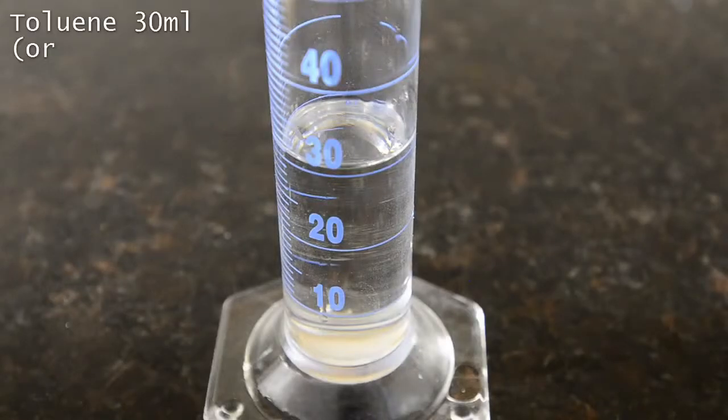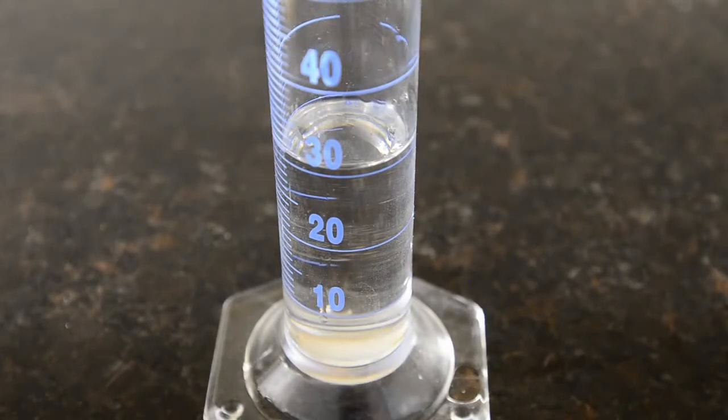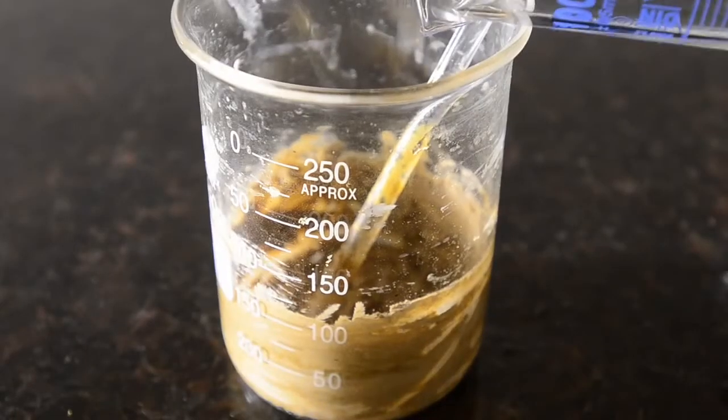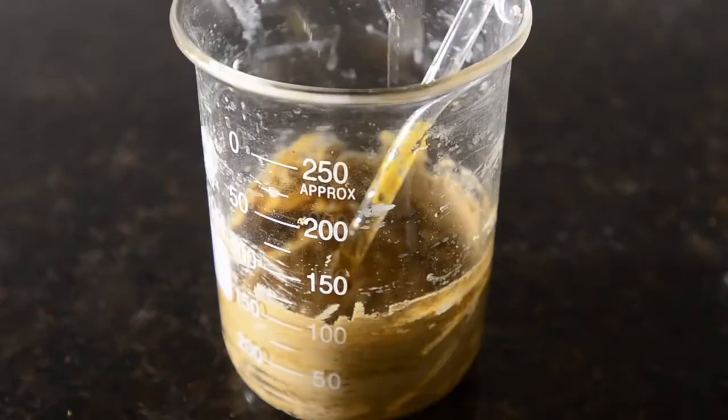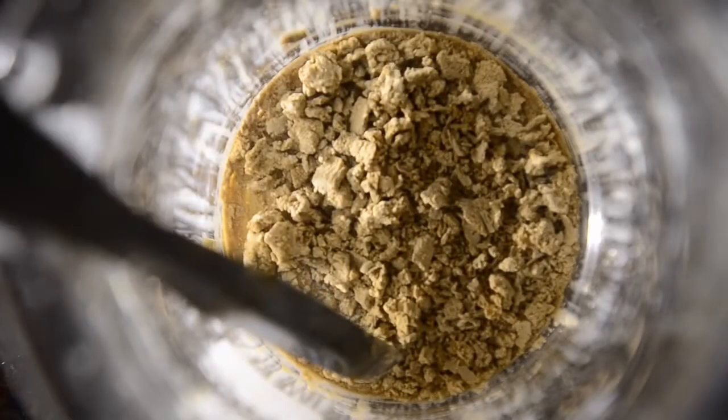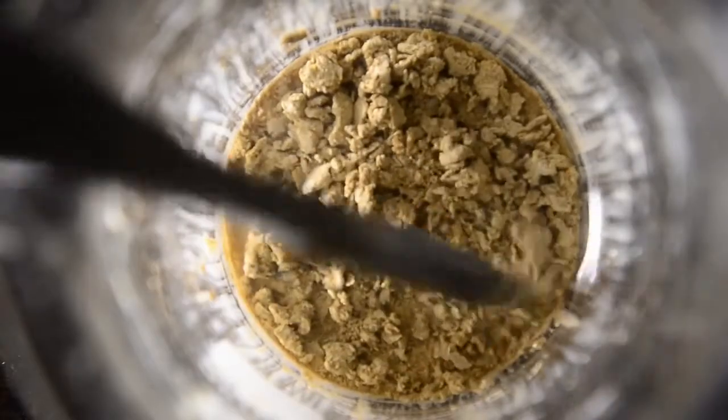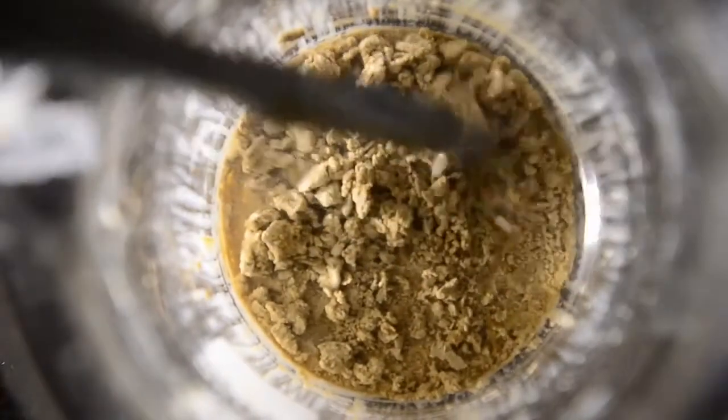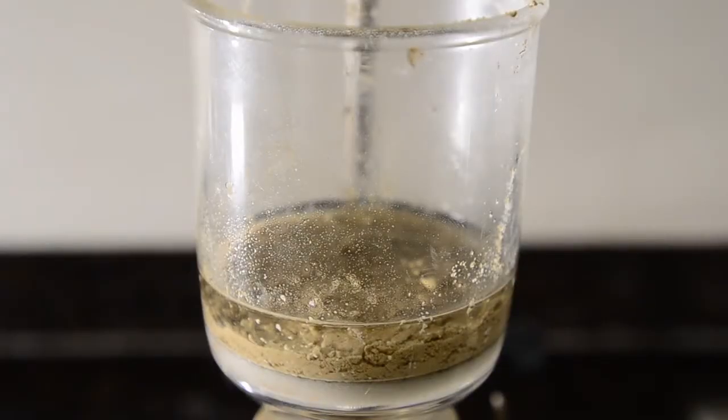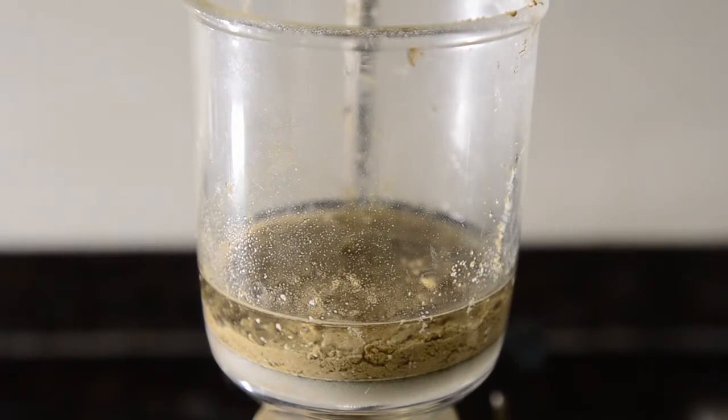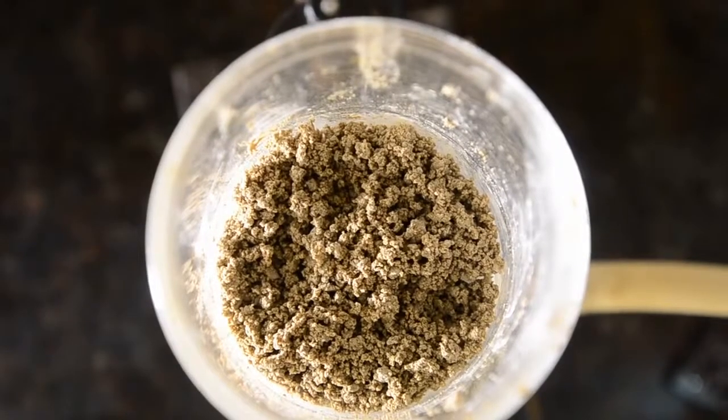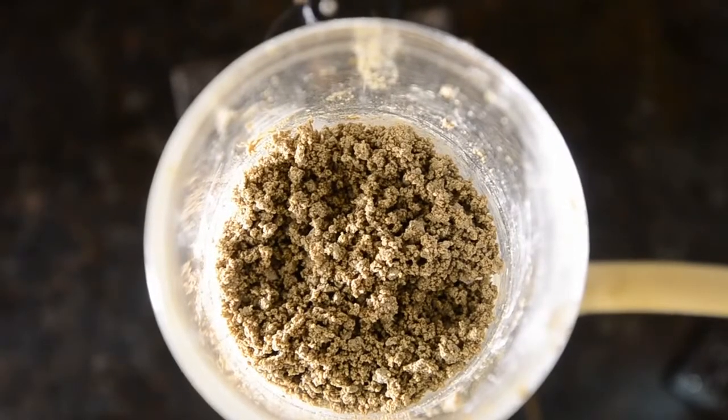Measure out 30 mls of toluene and add this to the beaker. Scrape all the solids off the sides and bottom of the beaker so you're left with a solid suspended in the toluene. Set up for vacuum filtration and filter the solids. Take care to dry them as much as you can on the pump to remove toluene.